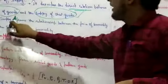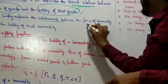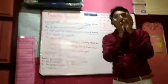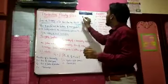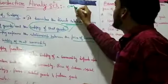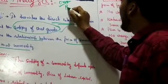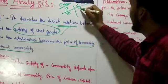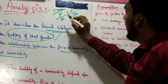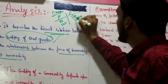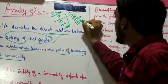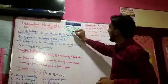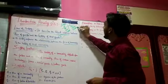In a simple way, it explains the relationship between price of commodity and the supply of that commodity. For example, I am having the orange business. Here is the price and here is the supply. When the price is 10, the supply is 100. When it is 100, it is 1000. When it is 1000, it will be 10,000. So, when there is an increase in price, there is an increase in supply.